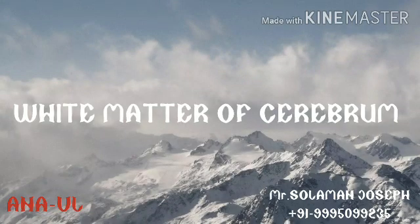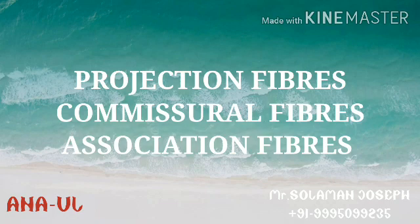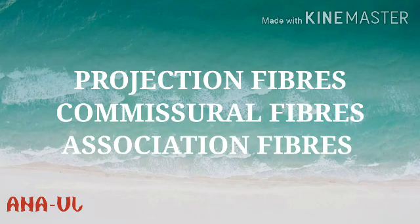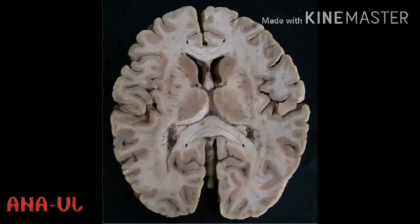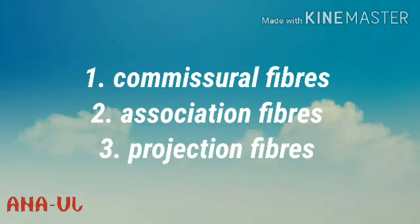Hello students, today we are going to discuss the white matter of the cerebral hemispheres. In this video we are going to learn about the projection fibers, commissural fibers, and association fibers. The white matter of the cerebral hemispheres basically contains two components: myelinated nerve fibers of many sizes and neuroglia, mostly oligodendrocytes.